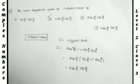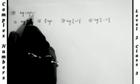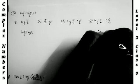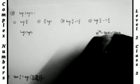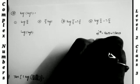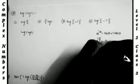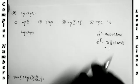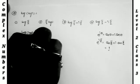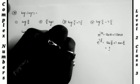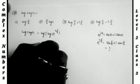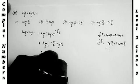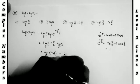Next problem: find log(log(i)). Using the formula e^(iθ) = cosθ + i sinθ, we get e^(iπ/2) = cos(π/2) + i sin(π/2) = i. So i = e^(iπ/2), and log(i) = (iπ/2)·log e = iπ/2, since log e = 1. Now log(log(i)) = log(iπ/2). Using log(ab) = log a + log b: log i + log(π/2).